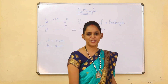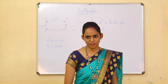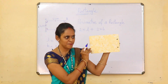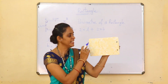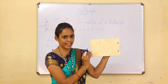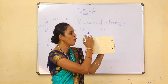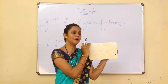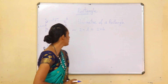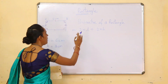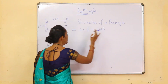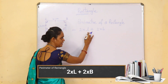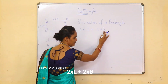Now let's learn about the perimeter of rectangle. What is a perimeter? Look at this object — this is a shape of rectangle. The outer surface of the rectangle is its perimeter. The perimeter of a rectangle equals 2 into length plus 2 into width.